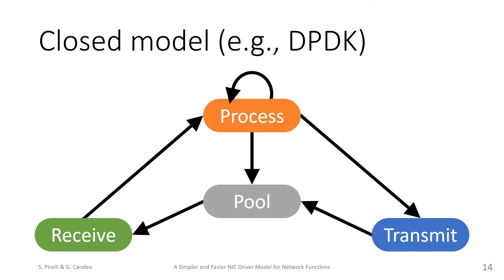To avoid copies, frameworks such as DPDK introduced a closed model, in which all buffers are pre-allocated and put into a buffer pool. They are shared between the network function and the driver. Some buffers are then given to the network card to receive data in.